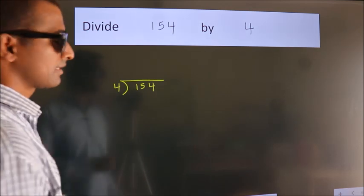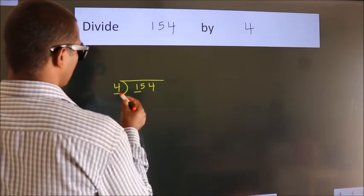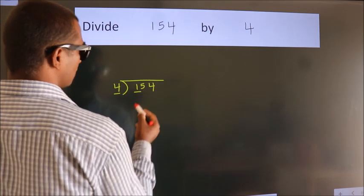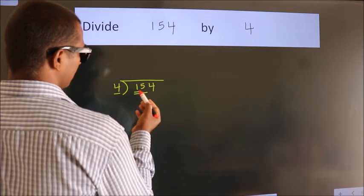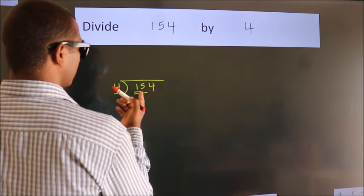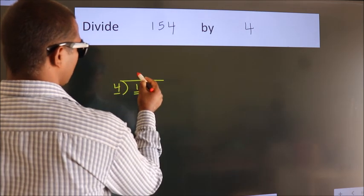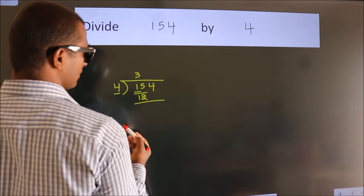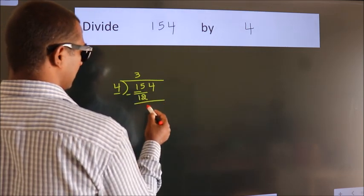Next, here we have 1, here 4. 1 is smaller than 4, so we should take 2 numbers: 15. A number close to 15 in the 4 table is 4 threes, 12. Now we subtract and get 3.